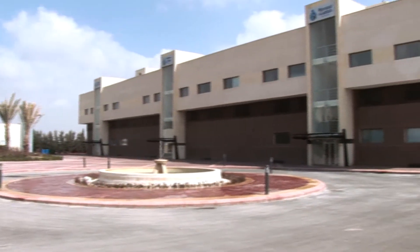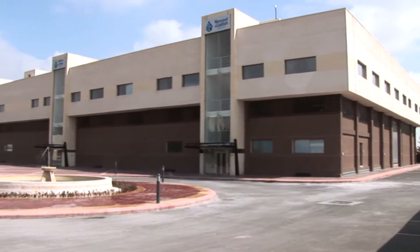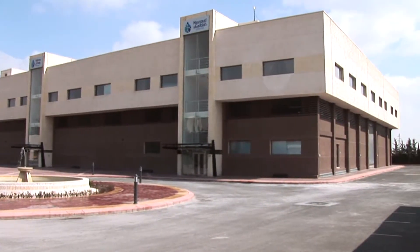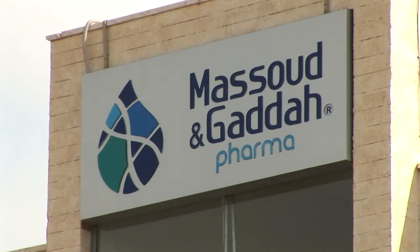Located on the outskirts of Damascus, Masud al-Gadda Pharmaceutical Company maintains one of the most modern pharmaceutical production lines in Syria.